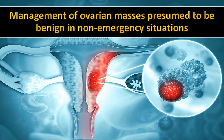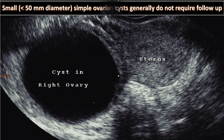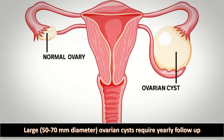Regarding management of ovarian masses presumed to be benign in non-emergency situations: women with small simple ovarian cysts less than 50 mm in diameter generally do not require follow-up, as these cysts are very likely to be physiological and almost always resolve within three menstrual cycles. Women with simple cysts of 50–70 mm should have yearly ultrasound follow-up, and those with larger simple cysts should be considered for further imaging by MRI or surgical intervention.